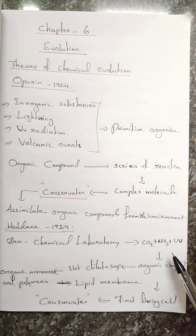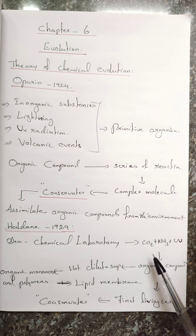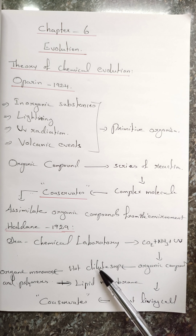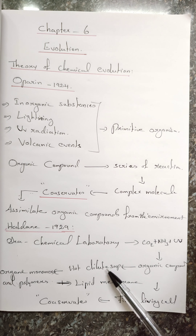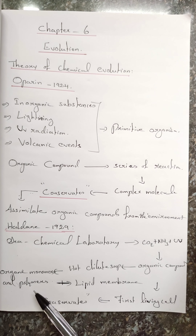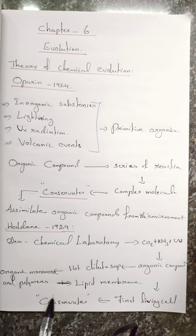Carbon dioxide, ammonia, and UV rays combined together to form organic compounds. Since there were many organic compounds in the sea, Haldane gave the sea the term 'hot dilute soup.' This hot dilute soup consisted of organic monomers — single units — as well as polymers — complex molecules formed from many units combined together.